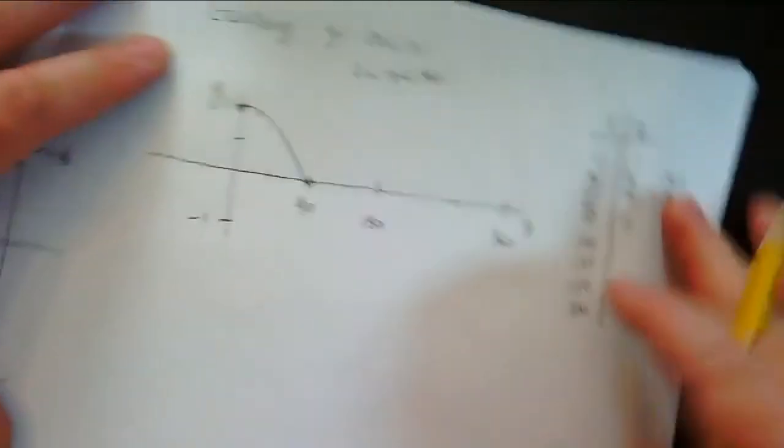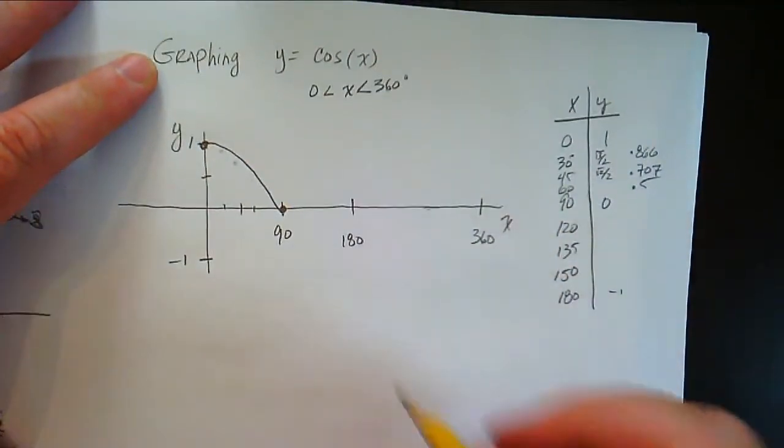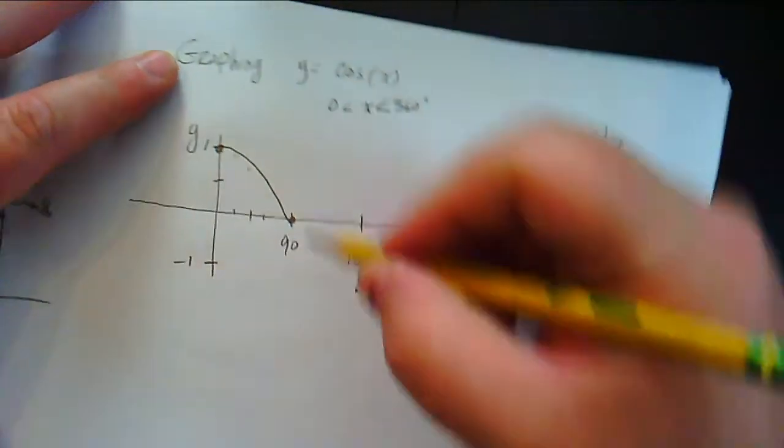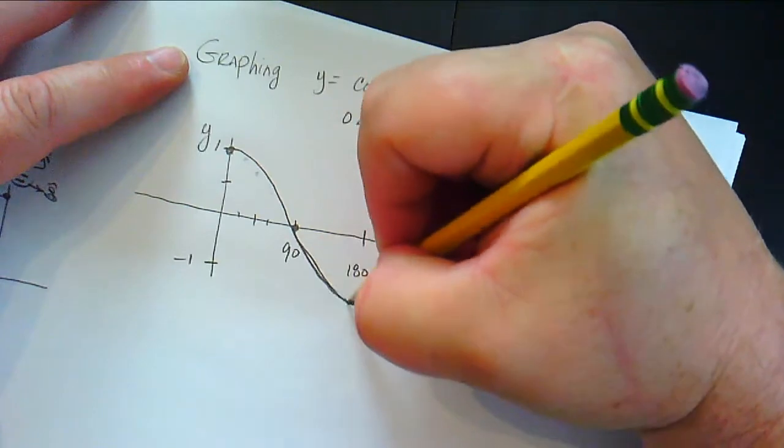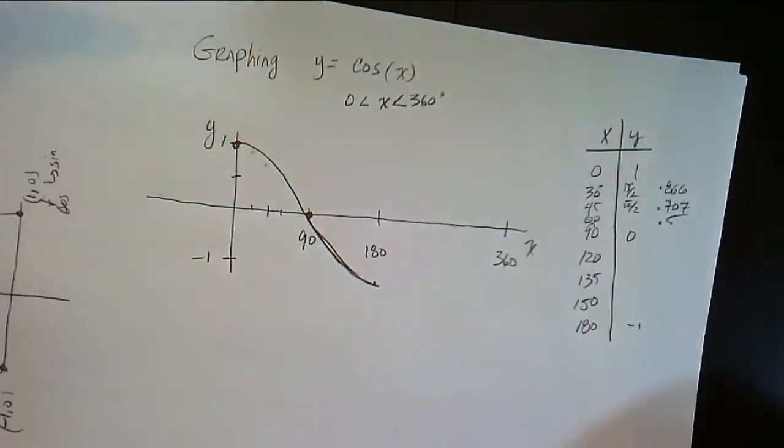So at 180, at 180, we're going to have an output of negative 1, which is right here. The curve is going to look like this. You see? The curve is going to kind of look like that. That's half of the cycle.